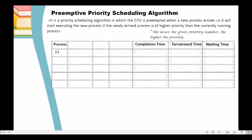We are given here five processes: P1, P2, P3, P4, P5. The arrival times are: P1 = 2, P2 = 1, P3 = 0, P4 = 5, P5 = 4. The priorities are: P1 = 1, P2 = 2, P3 = 3, P4 = 4, P5 = 5. And the burst times are: P1 = 6, P2 = 7, P3 = 4, P4 = 5, P5 = 6.